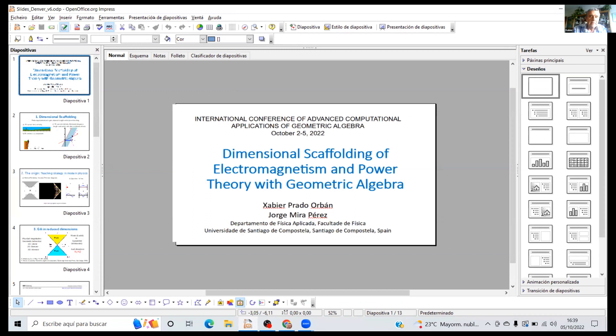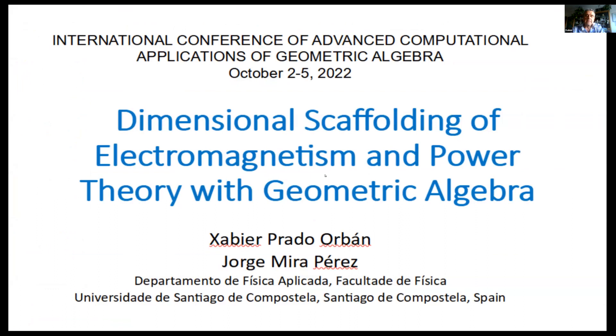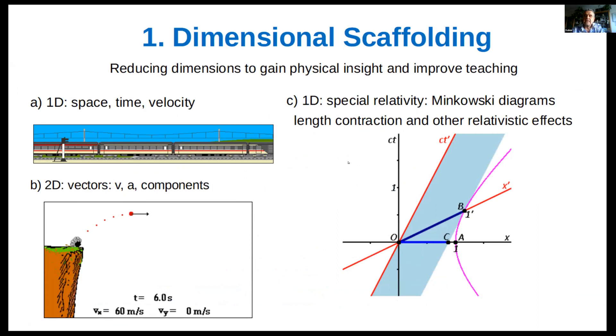My name is Javier Prado and it is my pleasure to present our work entitled Dimensional Scaffolding of Electromagnetism and Power Theory with Geometric Algebra. With dimensional scaffolding, we mean changing the number of spatial dimensions in order to gain more insight on a physical situation. This can be used as a teaching procedure.